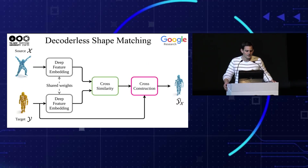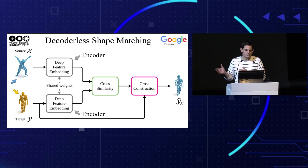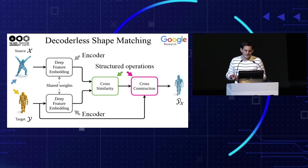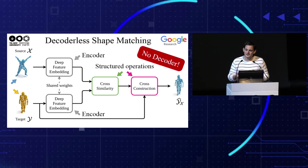This brings us to the key idea in our method. We take the source and target point clouds and learn a pair-point deep feature embedding — this is the encoder part of our system. Then we use similarity in the learned feature space and a construction operation that takes the similarity and target points themselves to construct the target point cloud. The similarity and construction operations are structured and do not involve any learning or regression. Thus, we have no decoder in our system — we omit the decoder and avoid the drawbacks mentioned before. In other words, our system is decoderless.